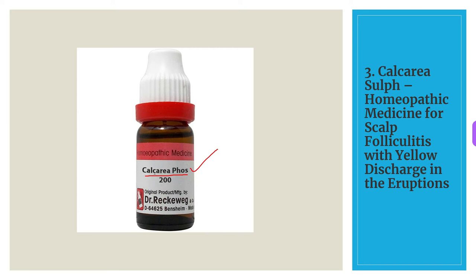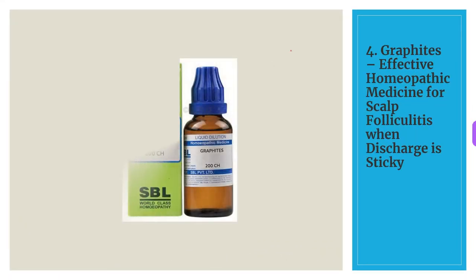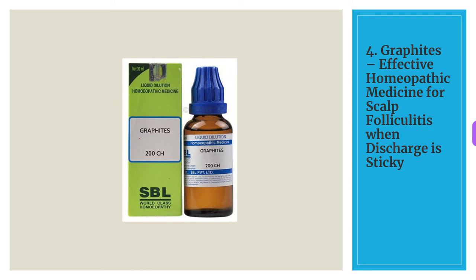The fourth medicine for scalp folliculitis is Graphites. Graphites is a useful homeopathic treatment for scalp folliculitis where the primary feature is a sticky discharge from the eruptions. The eruptions are moist rather than dry. These eruptions may also be very itchy, and washing the scalp may give temporary relief.